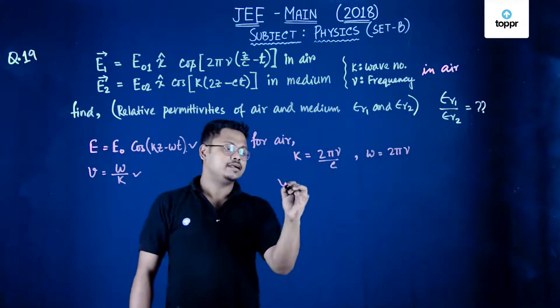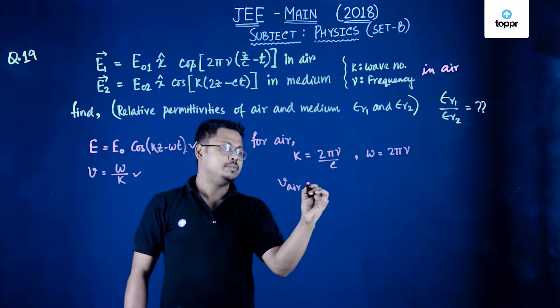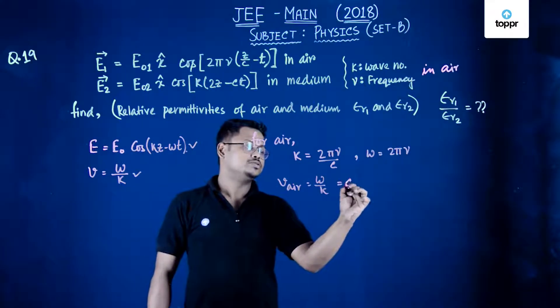So the velocity in air, velocity in air will be omega upon k and that will be equal to c.